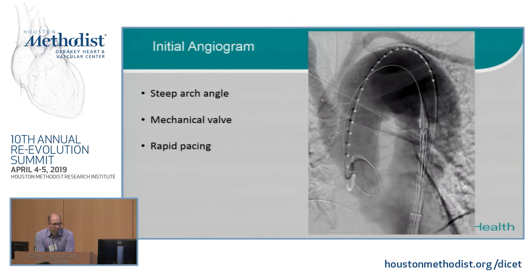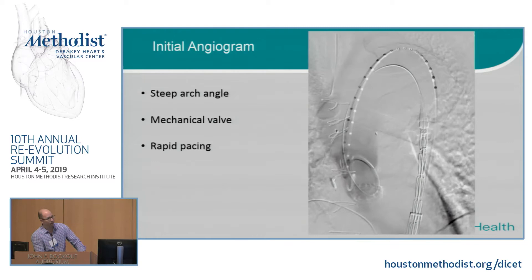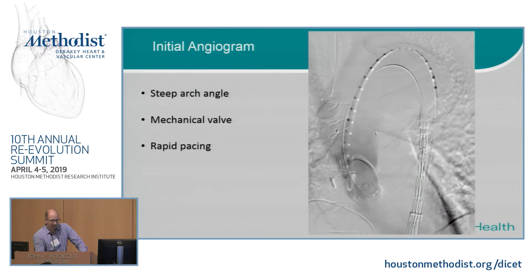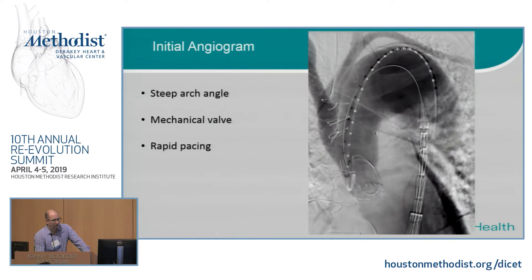This left us with a pretty steep arch angle. She also had an Onyx mechanical valve in place, which made it basically impossible to cross the valve with a wire — none of my cardiology colleagues wanted to cross it. Sometimes we would go get trans-apical access and do a through-and-through wire with a 5-French sheath under ultrasound guidance, but we didn't feel comfortable doing that through this valve, because if you go through the wrong space, the wire can get caught.